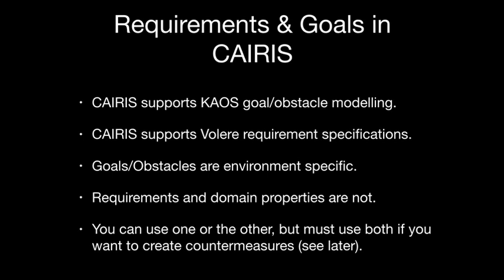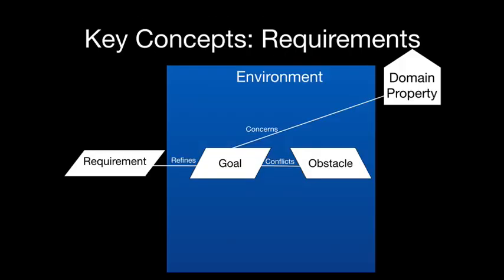The main difference between the two is that goals and obstacles in KAOS are environment-specific — they allow us to imagine system requirements in different environments. Requirements, however, are not environment-specific; they always need to hold. We also have domain properties, which are statements or assumptions about the system. If you want to specify countermeasures to risks, you have to specify both goals and requirements.